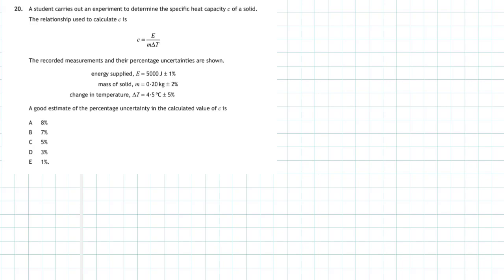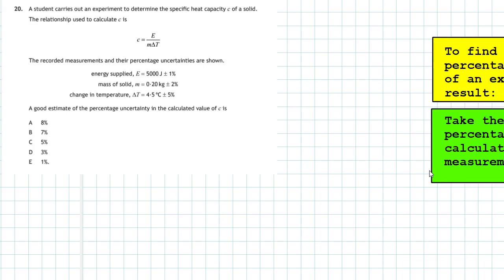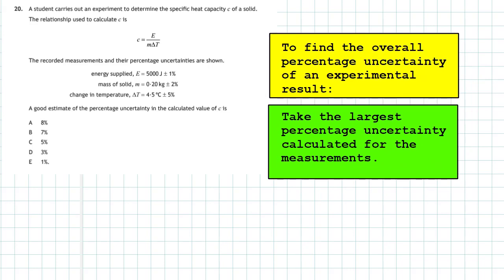When we do any experiment to find the overall percentage uncertainty of an experimental result, we have to take the largest percentage uncertainty calculated for the measurements. Looking at our measurements, the change in temperature has given us an uncertainty of plus or minus 5 percent, so that's the one we have to use.